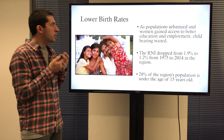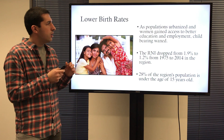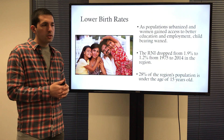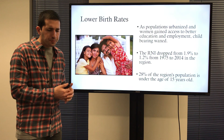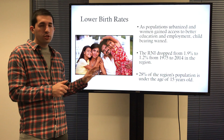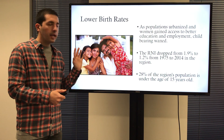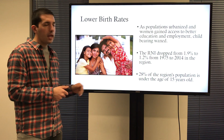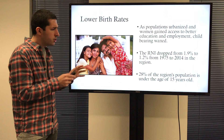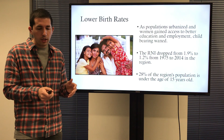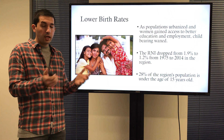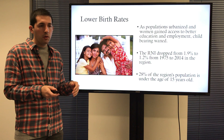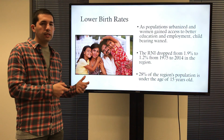Population and gender: lower birth rates are happening right now in the region. As populations have continued to urbanize and women have continued to gain access to education and employment, childbearing has waned. The rate of natural increase has dropped from nearly two to just over one between 1975 and 2014, slowing the general population of the region. However, 28% of the region's population is under the age of 15. The entire region has 630 million people, and continuing with that rate of natural increase, it would grow to 780 million people by 2050 — continuing to grow, just slightly slower.